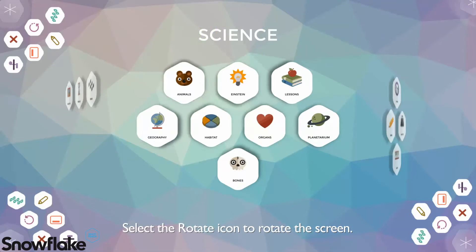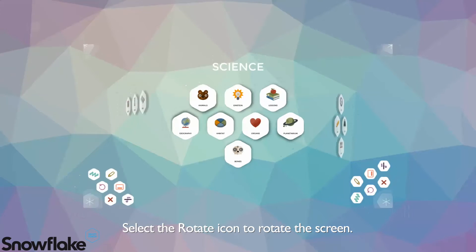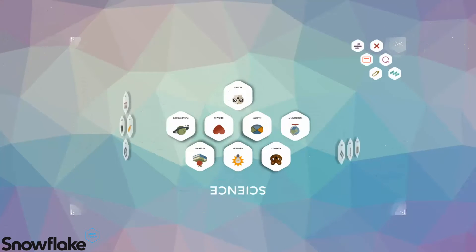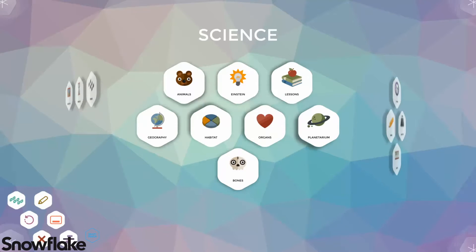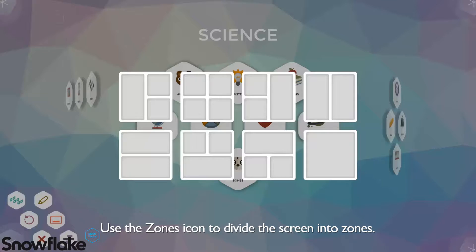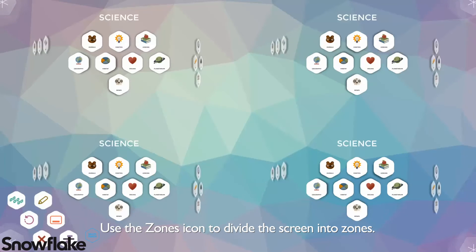To rotate the screen I can select the rotate icon. I can set the screen to appear in zones using the zones icon. In this case four zones.